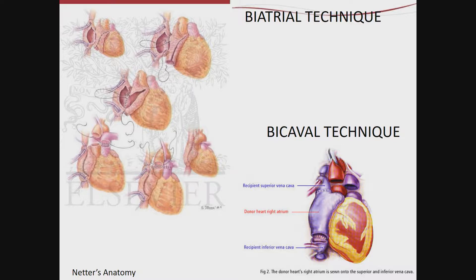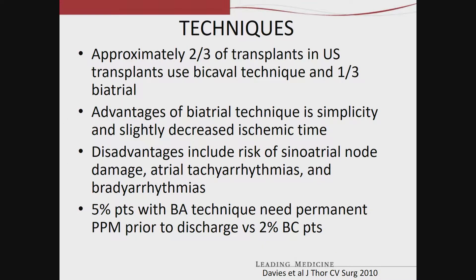To put it into context, how is the transplant done? There are two different techniques. One is the biatrial technique — you can see this drawing from Netter — where some of the donor atrium is attached to the recipient atrium, and the anastomosis is done atrium to atrium. The other is the bicaval technique, where you have the IVC and SVC anastomosis, so you're not including any of the recipient right atrium.